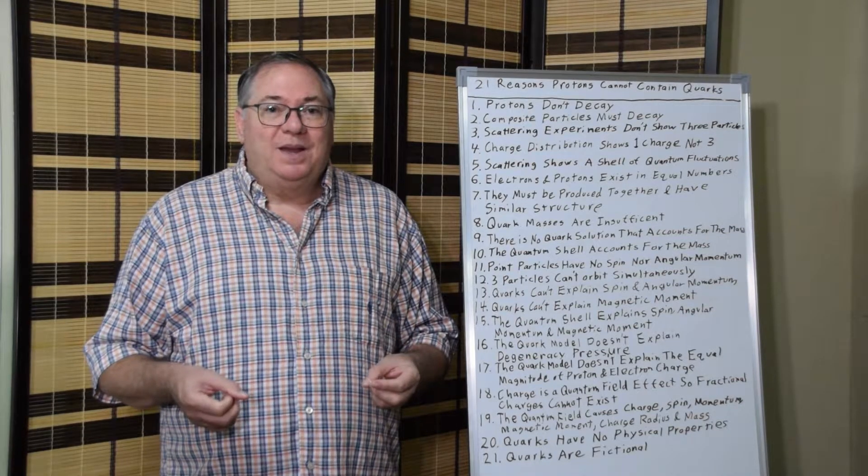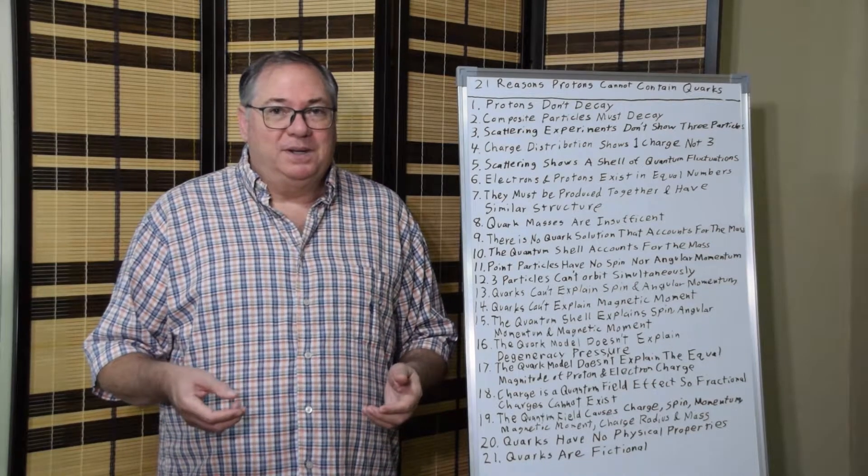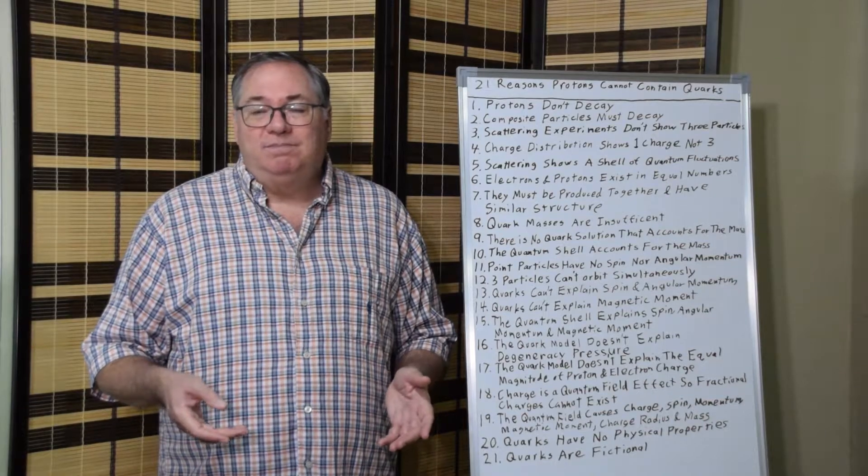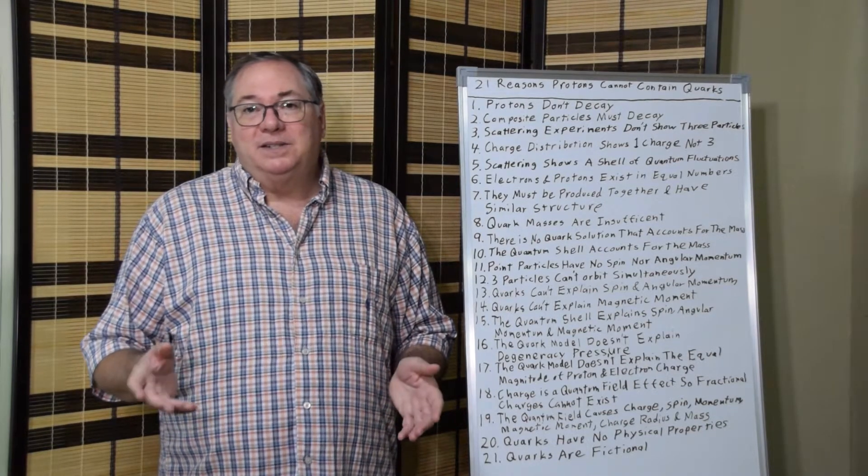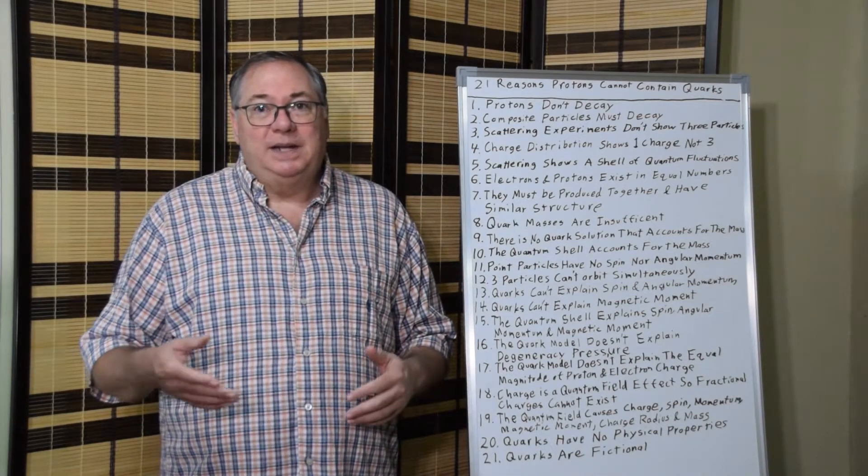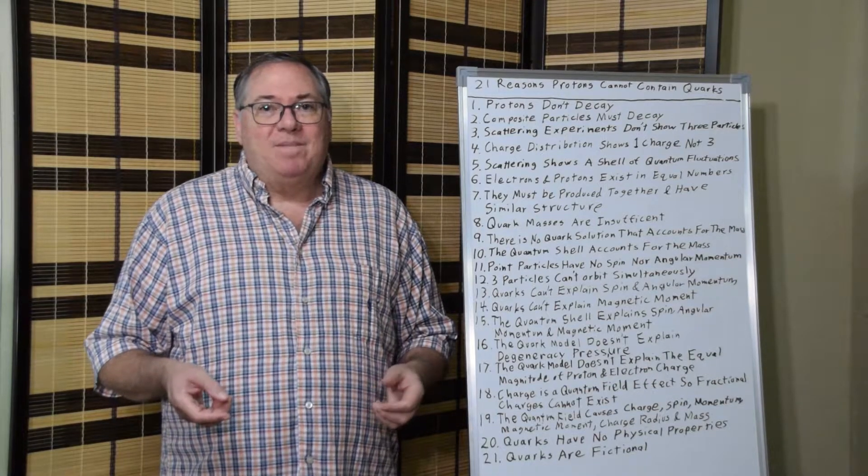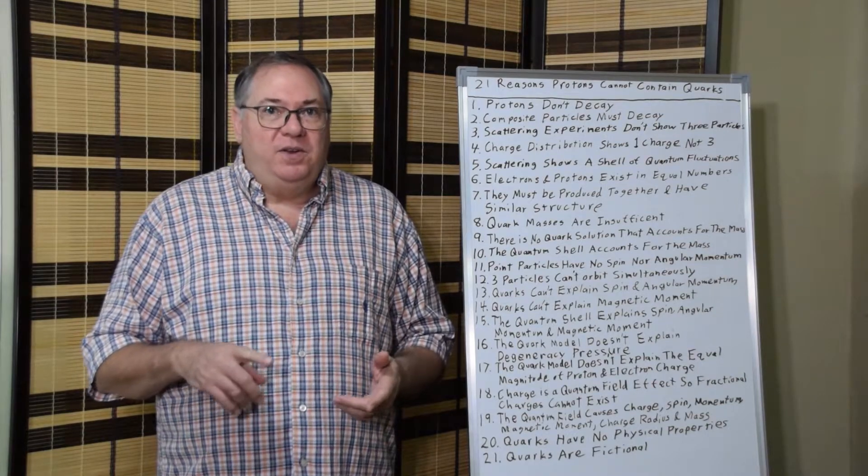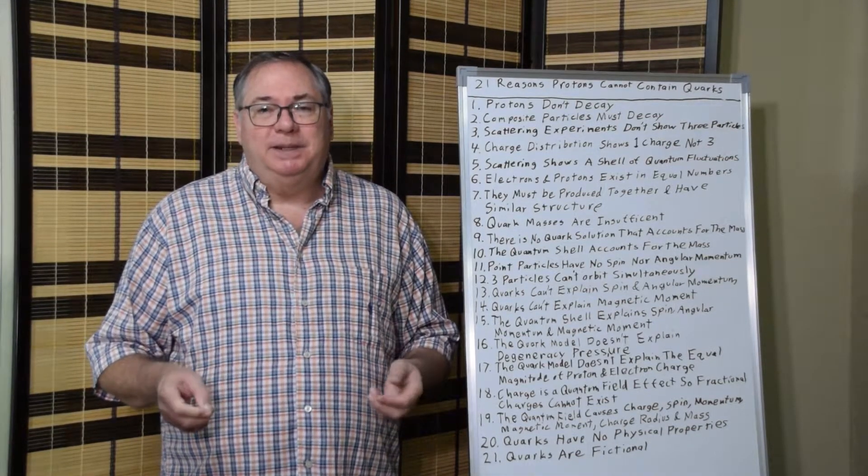So eleven, point particles have no spin or angular momentum. Quarks are thought to be point particles because no one understands how a quark structure would work. But a point particle can't have spin or angular momentum. So even though the table says that quarks have spin or angular momentum, it makes no sense to have a point particle with spin or angular momentum. So you have to come up with a structure of a quark that explains spin and angular momentum. Then twelve, three particles cannot orbit simultaneously. And this is similar to what I was discussing with mass. You can't have three particles, three charged particles, in some sort of orbit that gives you consistent spin and angular momentum.